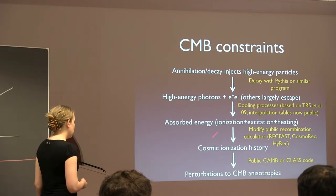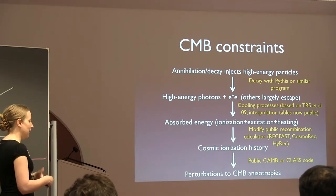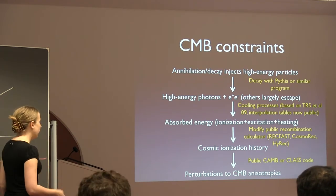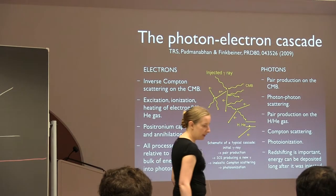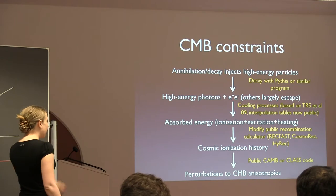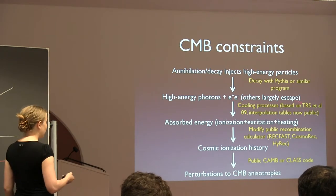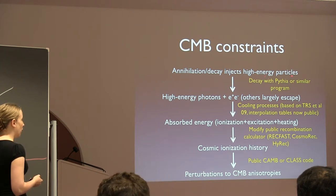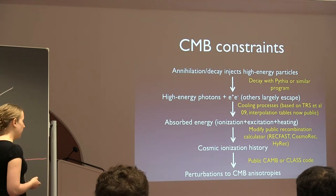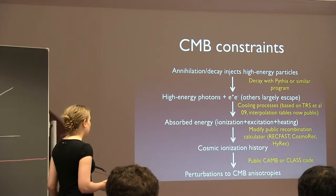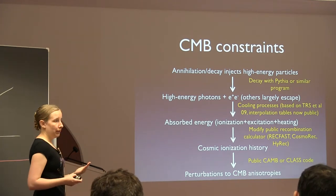You need to model the full cascade of secondary particles and determine what they do to ionizing hydrogen, exciting hydrogen, and heating the gas. You can do this by modifying public codes that translate extra energy in these channels into what the actual ionization history is. Once you have the perturbations to the ionization history, excellent public codes translate that into perturbations to the CMB. This entire process can essentially be rolled into one number for s-wave annihilation — the shape of the perturbation to CMB anisotropies is exactly the same regardless of what spectrum of high-energy particles you inject.